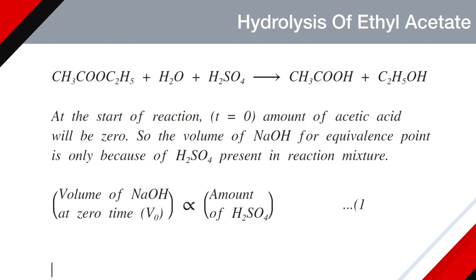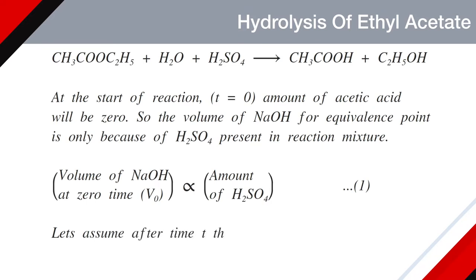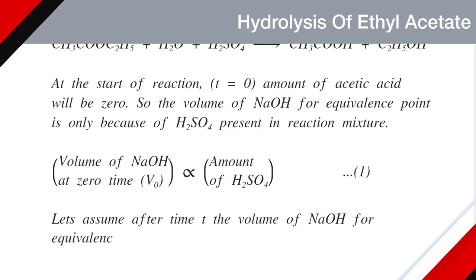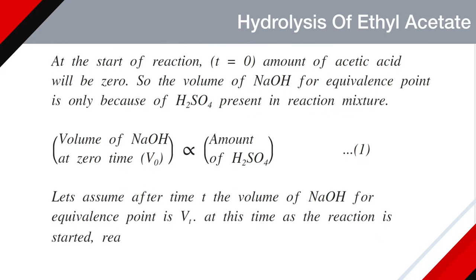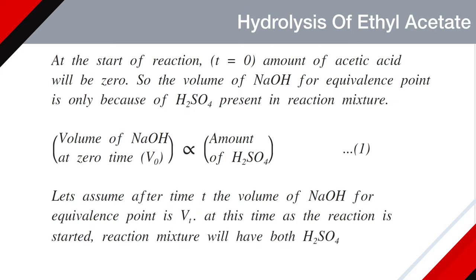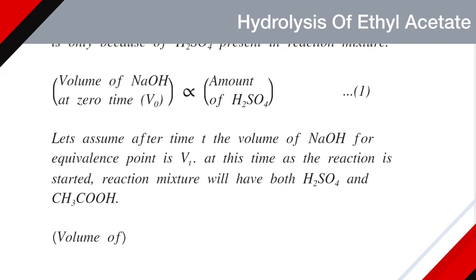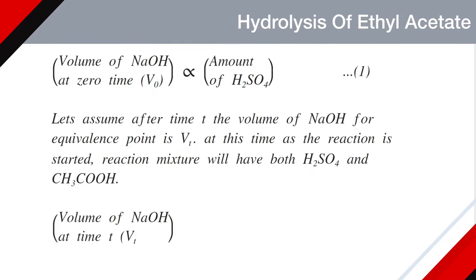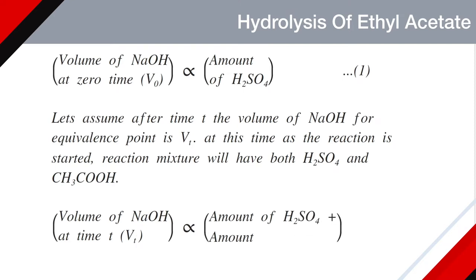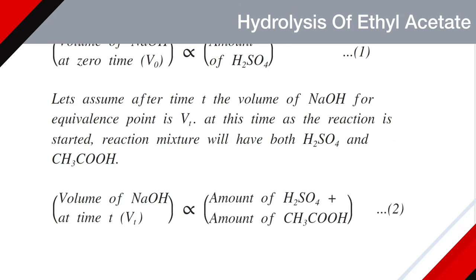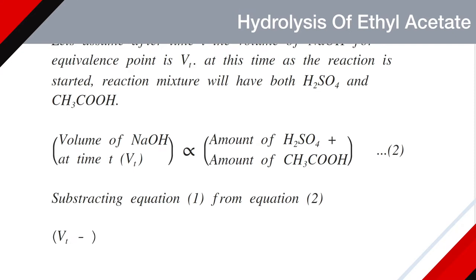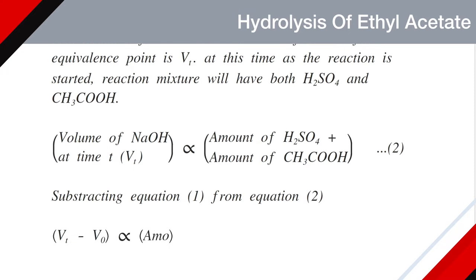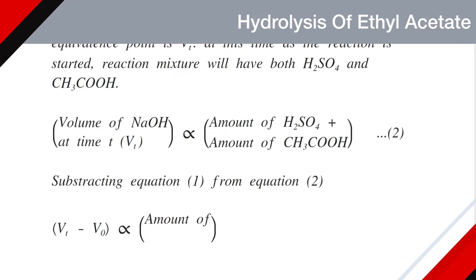After time t, the volume of sodium hydroxide for equivalence point is Vt. At this time, as the reaction has started, the reaction mixture will have both sulphuric acid and acetic acid. Therefore, Vt is proportional to amount of sulphuric acid plus amount of acetic acid. This is equation number two. Subtracting equation one from equation two, we get Vt minus V0 is proportional to amount of acetic acid, as the sulphuric acid terms cancel.